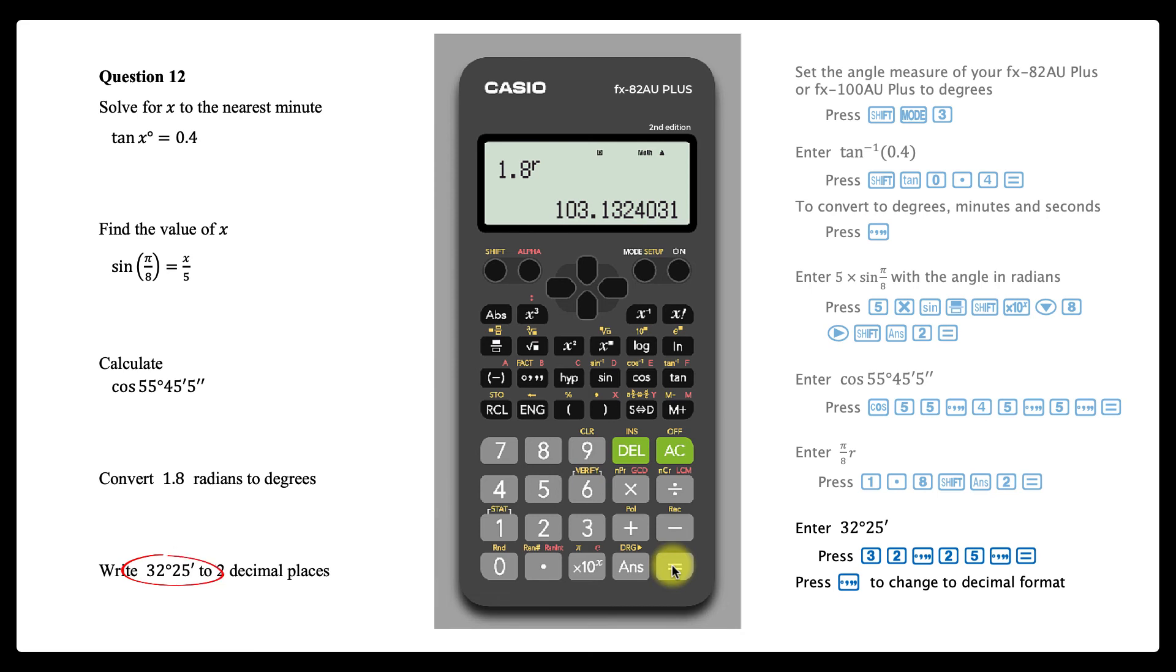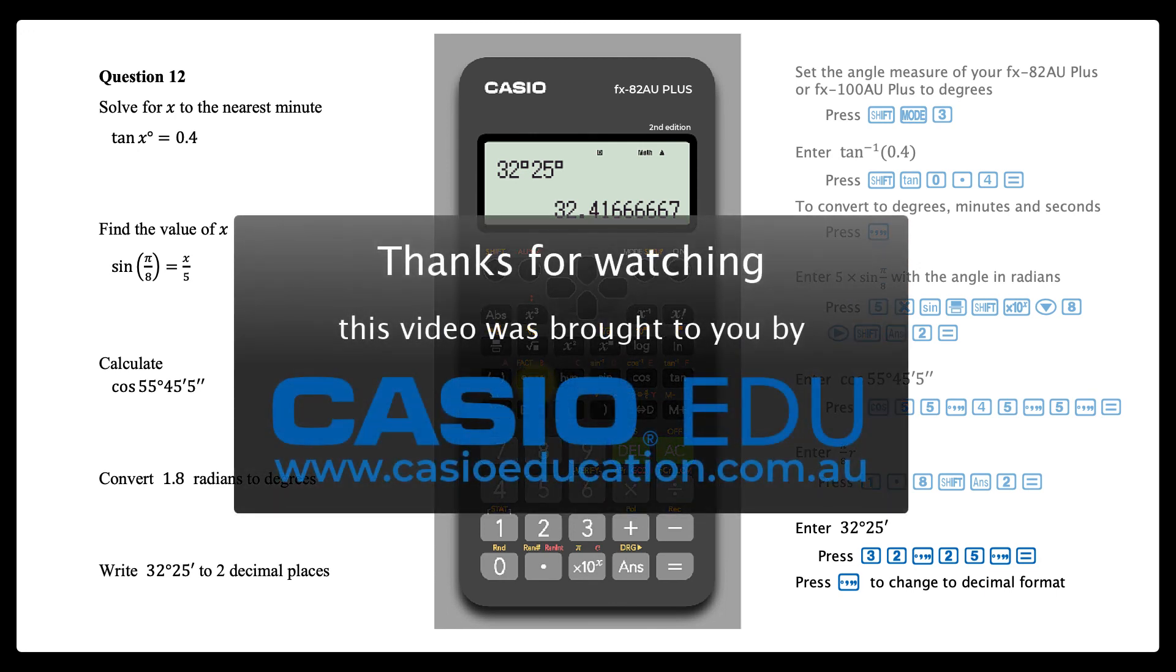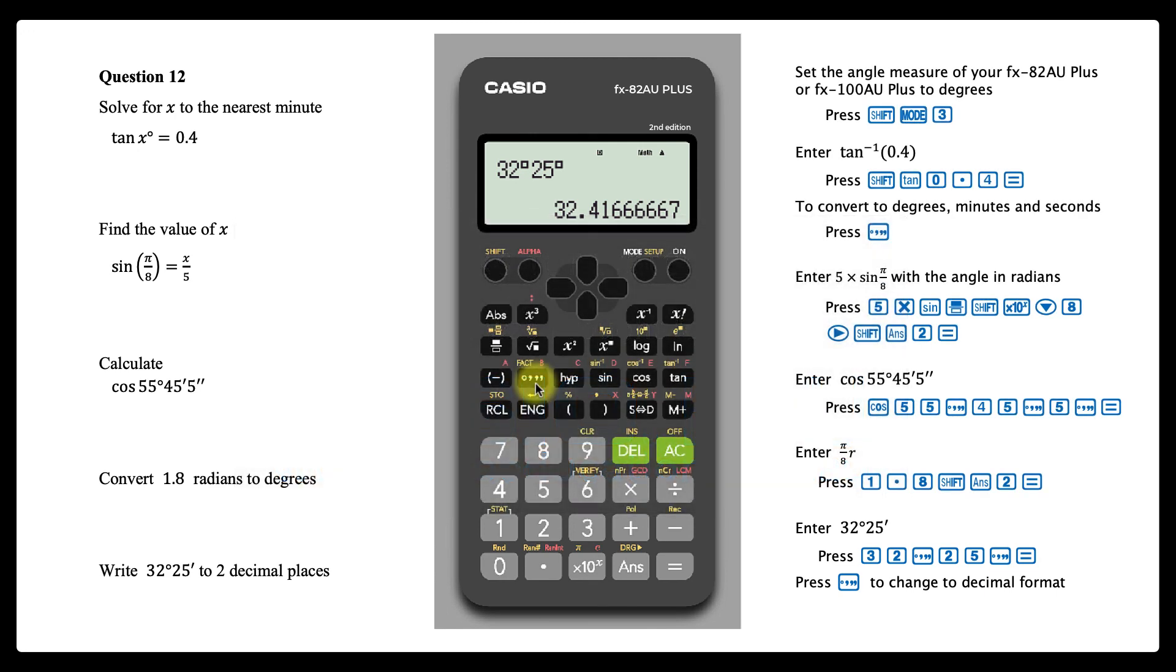To convert an angle from degrees, minutes and seconds into decimal format, first enter it using the degrees, minutes, seconds key. If the angle has zero seconds, it can be entered as such or equals can be pressed after the minutes are entered. Pressing the degrees, minutes, seconds key one more time will convert this angle into decimal format.